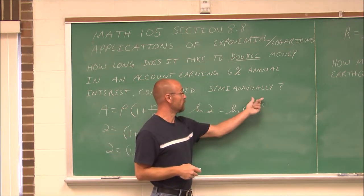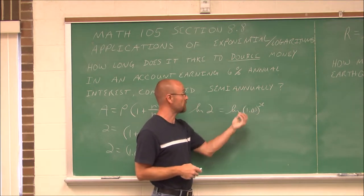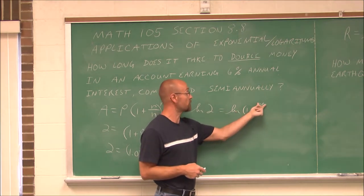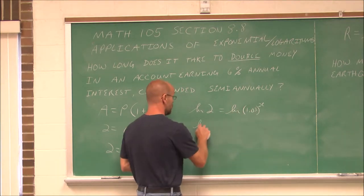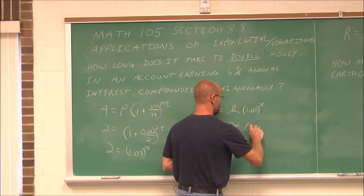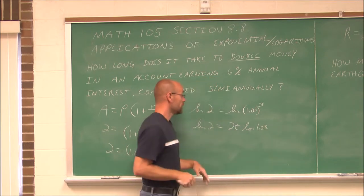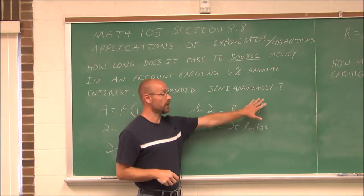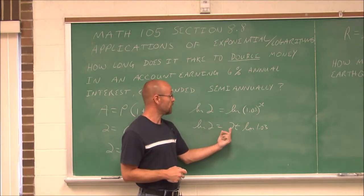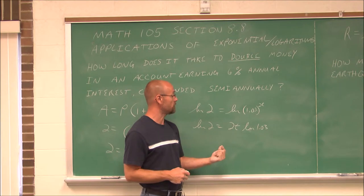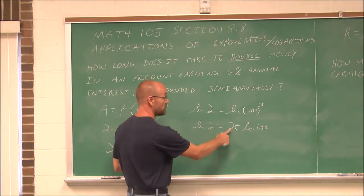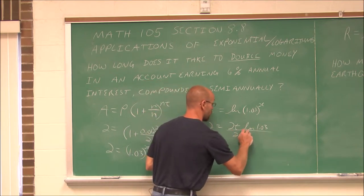Now I can use some rules of exponents. I have the power rule of exponents, which means a power times a power. I can use that as the power rule of logarithms and bring that out front, multiply by the power. Now I have that t out of the exponential position, so now I can solve for it. Isolate t. What am I doing to t? I'm multiplying it by 2 and then multiplying it by ln of 1.03. Divide both sides by 2 and ln.